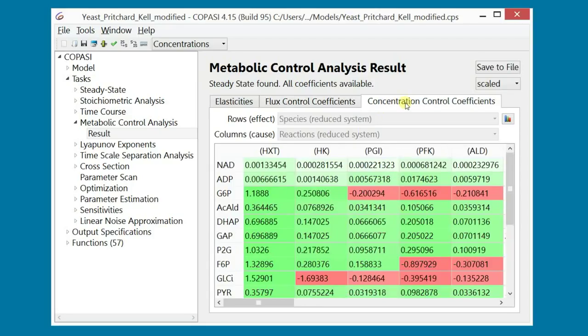In this other tab, you have the matrix of the concentration control coefficients. The columns, again, represent the perturbed enzymes, but the rows, this time, represent the species that were affected. So, if we have N reactions and M species, this will be an M by N matrix. Again, the color code will help you to identify the highest coefficients and their sign.